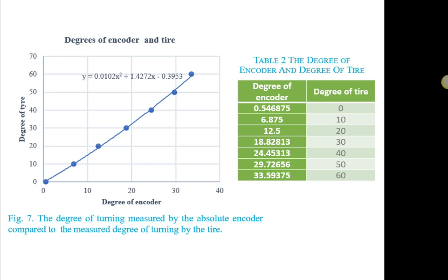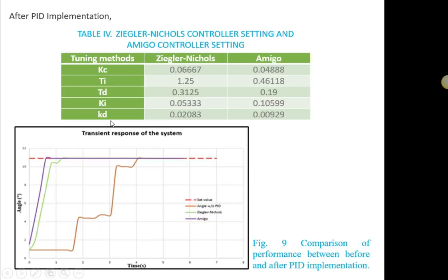And therefore, to perform this PID controller, we are going to introduce a tuning method. Two tuning methods, which is the Ziegler-Nichols and Amigo. According to this table, you can see the parameter that is obtained by using a Ziegler-Nichols tuning and Amigo tuning method.